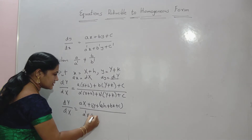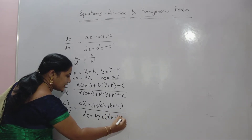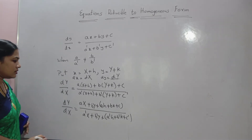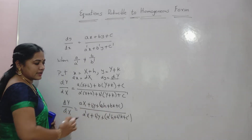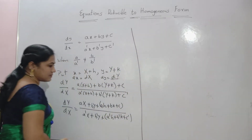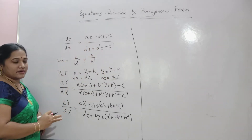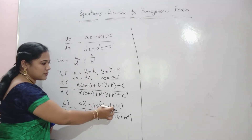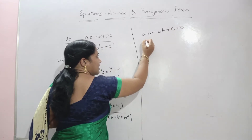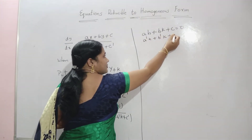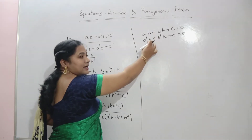And the denominator gives a-dash X plus b-dash Y plus a-dash h plus b-dash k plus c-dash. Now equate ah plus bk plus c equals 0, and a-dash h plus b-dash k plus c-dash equals 0. Solve these two equations to get the values of h and k.